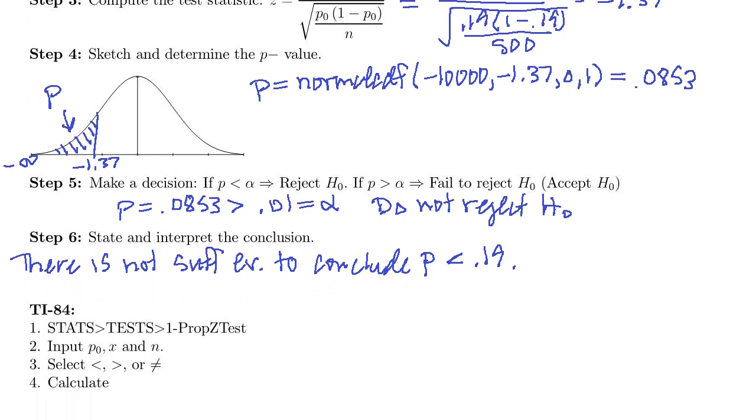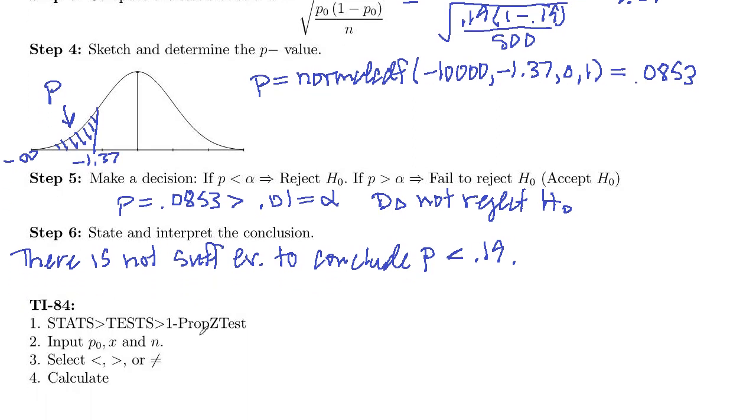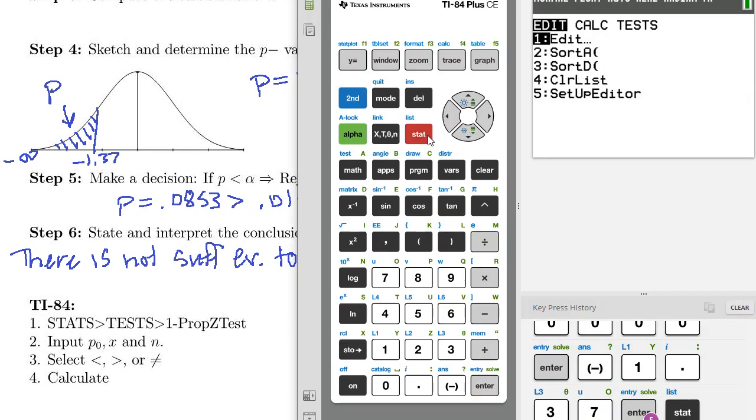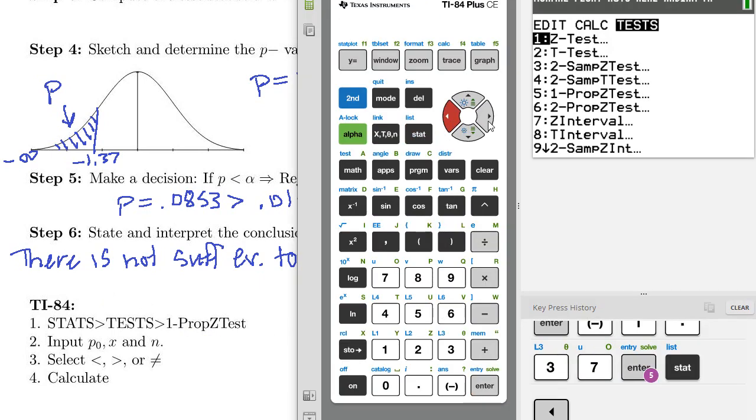And we can check this on the TI-84 using stat test, one prop Z test. Let's go ahead and do that. So stat tests, and then one prop Z test, one proportion Z test is number five.